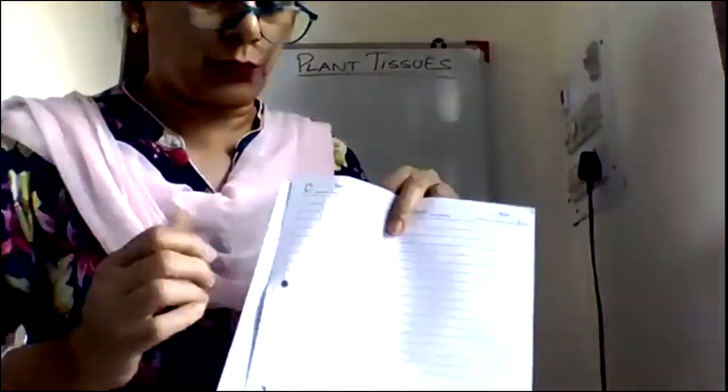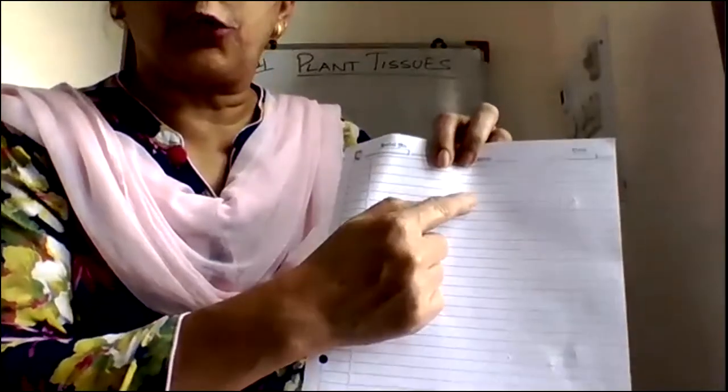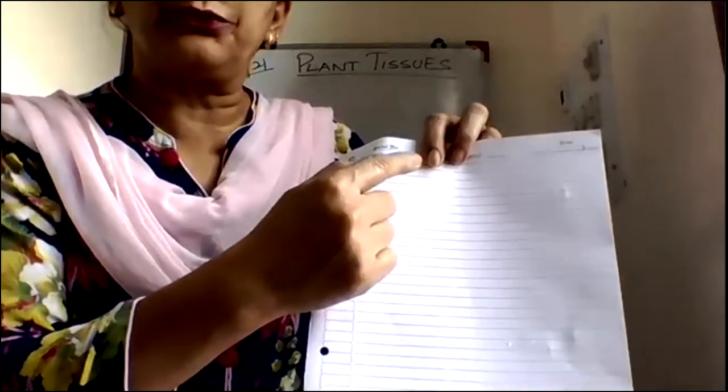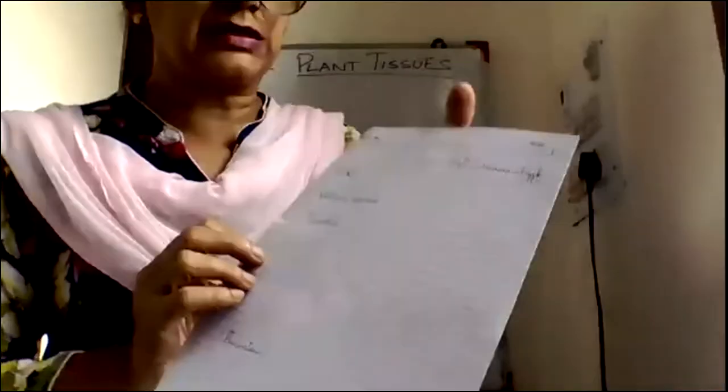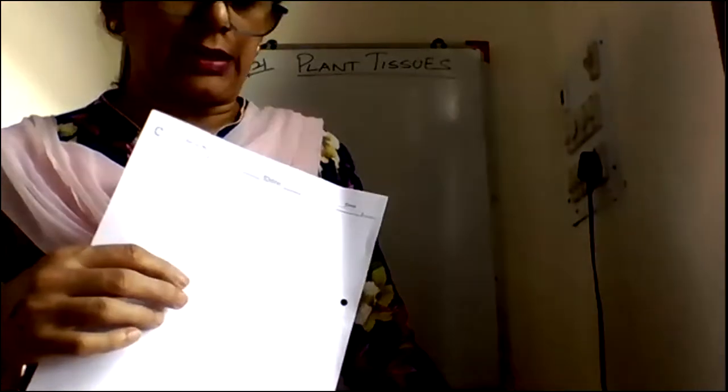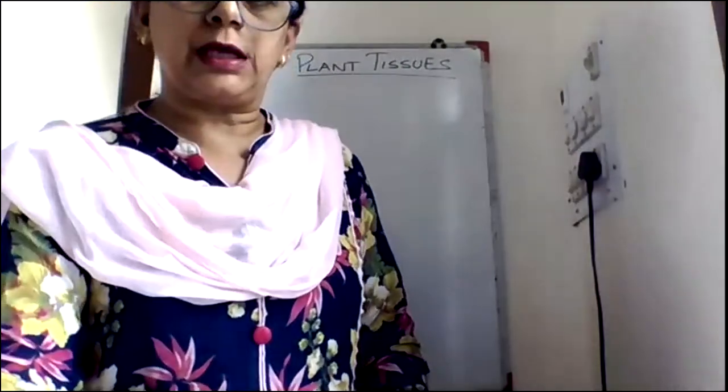On the ruled side again, write down the aim for making a temporary mount of animal human cheek cell. Then take another sheet and write the observations and draw the diagram. You can also use the back side itself. Take another sheet and write down the experiment for the human cheek cell. Then tie it all with thread. This is all you have to do for your practical activity.